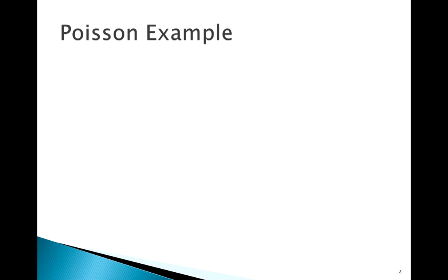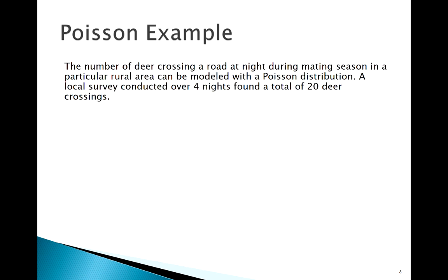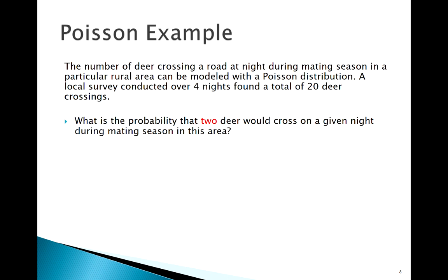Okay, welcome back. Let's look at some examples of applying the ideas of the Poisson distribution. Here's our question: we've observed over four nights 20 deer crossing a road at a certain point. So over four nights, 20 deer, that means five deer per night.